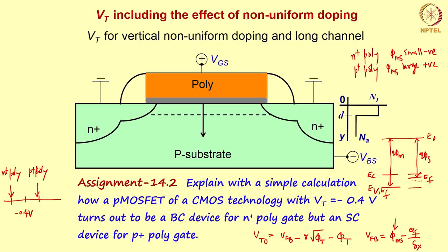For P+ poly, you must shift the threshold voltage to a more negative value to reach -0.4 V. To get a more negative threshold in an N-type substrate, you put positive charge there via ionized donors, increasing doping near the surface. This creates a surface channel device because the only way to create a P-type channel in an N-type substrate is by inverting the N-type region.